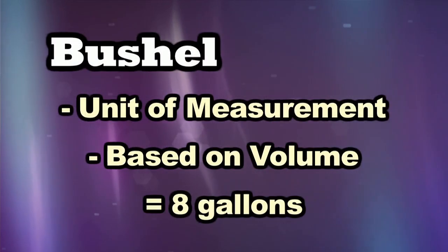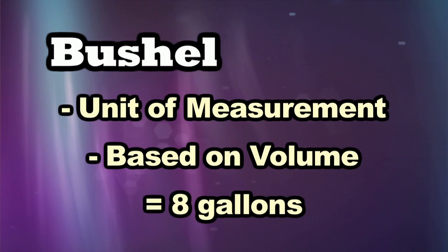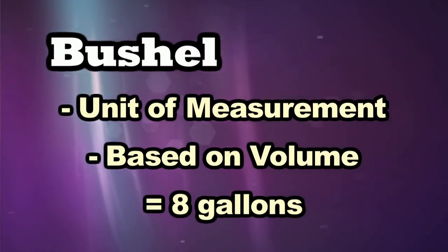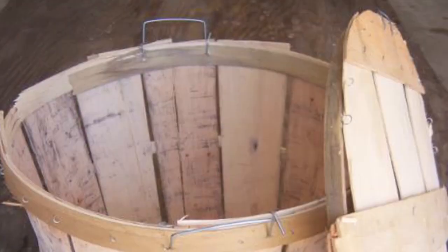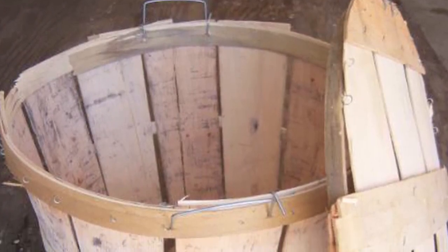The bushel is a unit of measure. It's actually based on volume, and what it really amounts to is eight gallons. So if you want to know exactly how much is in a bushel basket, it's eight gallons — whatever material will fit in that bushel basket. Since probably the last few decades, we've converted everything over to pounds, so it's actually done in pounds on the farm, and then we convert it back over to bushels.